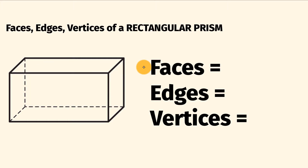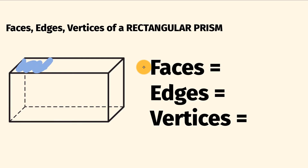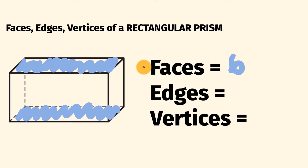We have two on the sides, one on the left here and one on the right. And we have one on the top and one on the bottom. So all together, we have six faces in a rectangular prism.